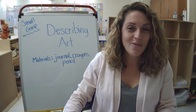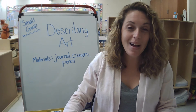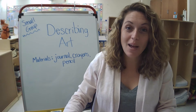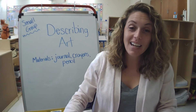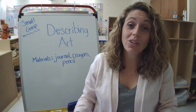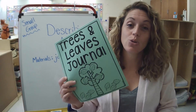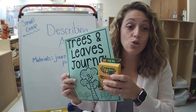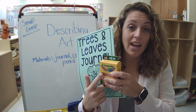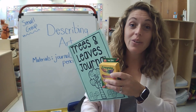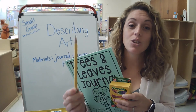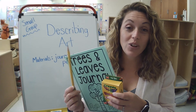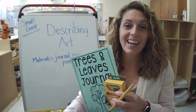Hi my friends! For our small group activity today we are going to be describing art. For this activity you will need three things: your journal, something to draw with — I have my crayons — and something to write with, like a pencil. So go get your three supplies and we'll get started.